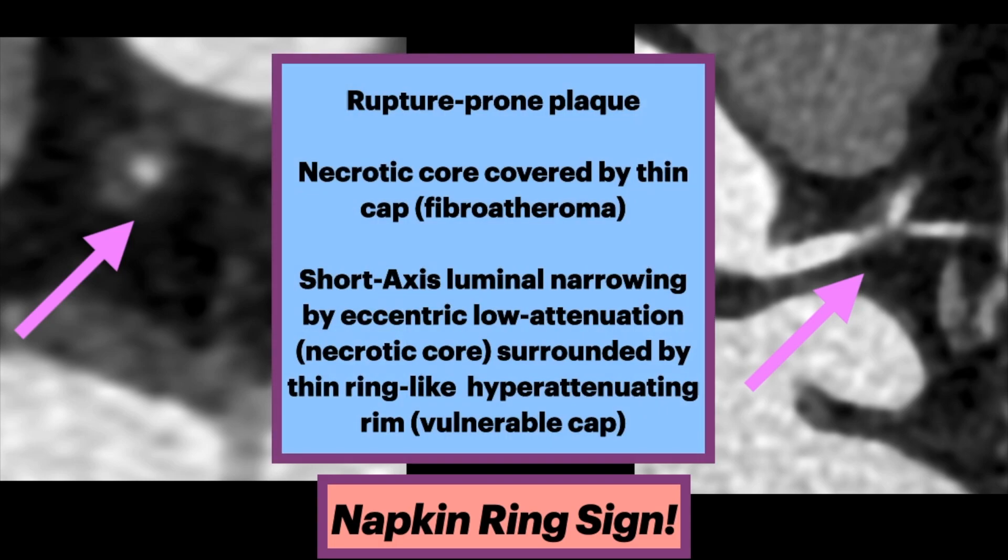It is a rupture-prone plaque, comprising a necrotic core covered by a thin cap, a.k.a. the fibroatheroma. In short axis, there is luminal narrowing by eccentric low attenuation necrotic core, surrounded by a thin, ring-like hyperattenuating rim — the vulnerable cap.